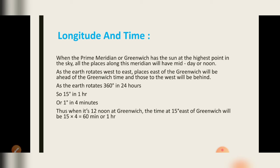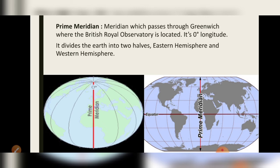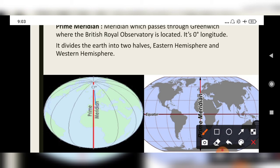Longitude and time: when the prime meridian of Greenwich has the sun at the highest point in the sky, all the places along this meridian will have midday or noon. As the earth rotates west to east, places east of Greenwich will be ahead of Greenwich time and those to the west will be behind. The earth rotates 360 degrees in 24 hours — so 15 degrees in 1 hour, and 1 degree in 4 minutes.